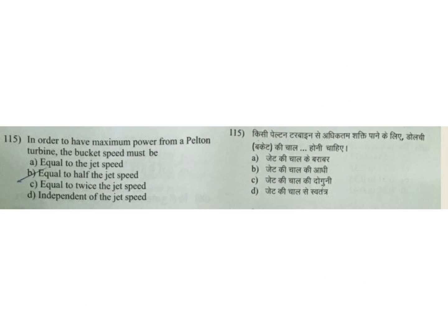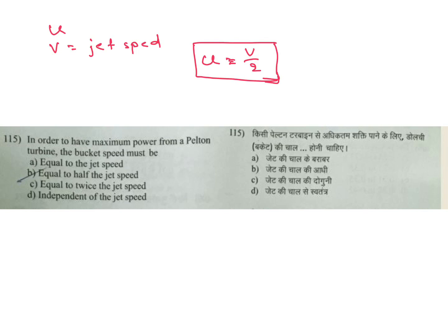In order to have maximum power from a Pelton turbine, the bucket speed must be how much? Bucket speed — capital V is jet speed — so for maximum power, U should be V by 2, equal to half the jet speed. This is very very important for all exams. B is the answer.